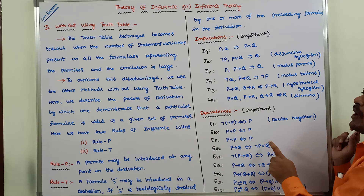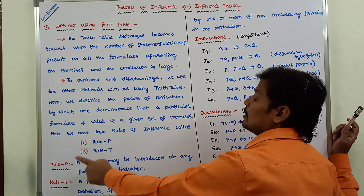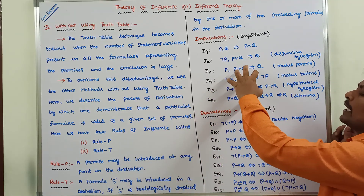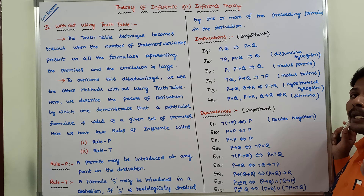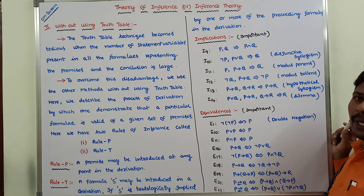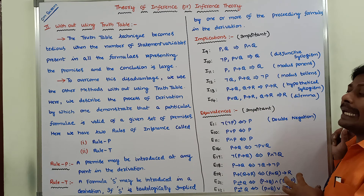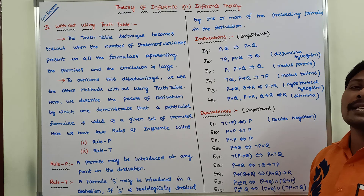These are the important equivalence formulas, the important implication formulas, and the two rules — Rule P and Rule T. These Rule P, Rule T, and important implication and equivalence formulas are used to derive the conclusion from the given set of premises without using a truth table. We will now discuss how to derive the conclusion using these tools with one example problem.